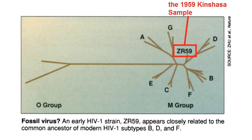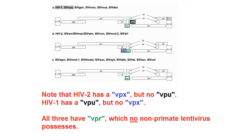Evolution as a tool, as a model, and a framework means that we understand this pathogen better. We know where it came from — chimpanzee SIV — and we know when it jumped to humans. A comparison of the genomes of all the lentiviruses has led us to a major breakthrough.